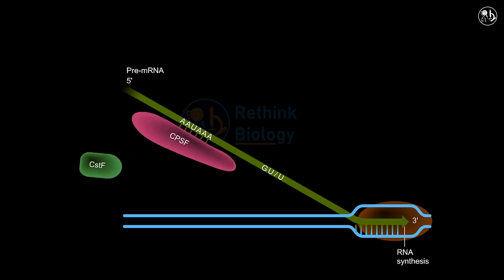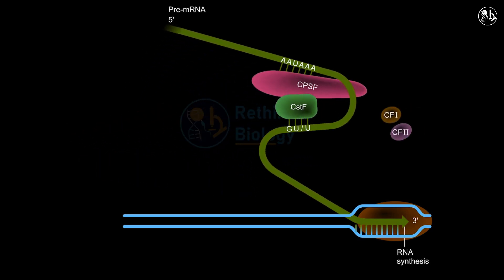Some proteins recognize this sequence and cut the pre-mRNA 10 to 30 nucleotides after it. Then another enzyme, poly-A polymerase, adds the poly-A tail to the cut 3' end. The poly-A tail makes the mRNA more stable and protects it from being degraded by enzymes in the cytoplasm.